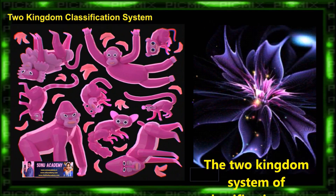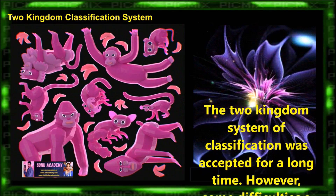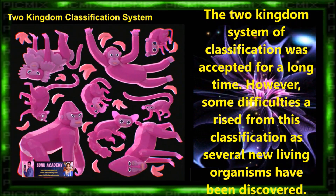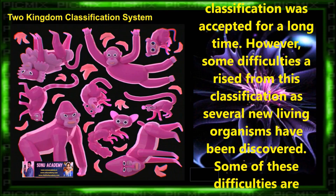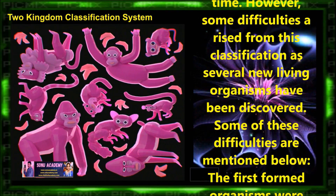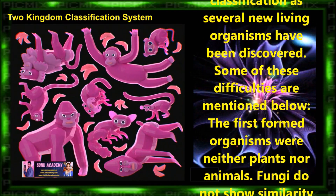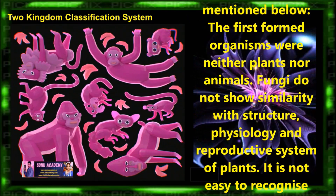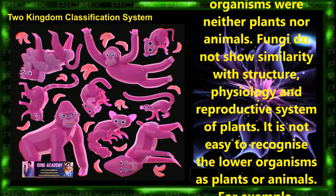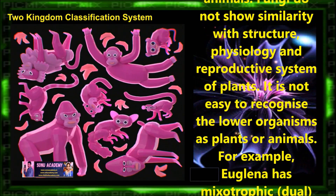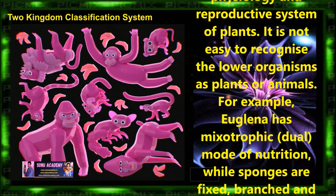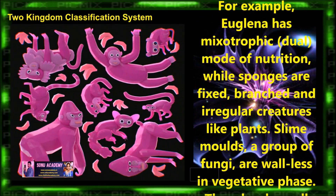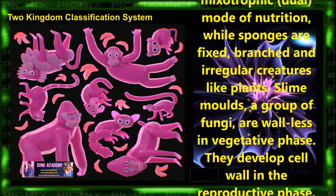Now let us discuss the objections against the two kingdom classification system. The two kingdom classification was accepted for a long time; however, difficulties arose as several new living organisms were discovered. The first-formed organisms were neither plants nor animals. Fungi do not show similarities in structure, physiology and reproductive system with plants. It is not easy to recognize lower organisms as plants or animals. For example, Euglena has mixotrophic dual mode of nutrition, while sponges are fixed, branched and irregular creatures like plants.